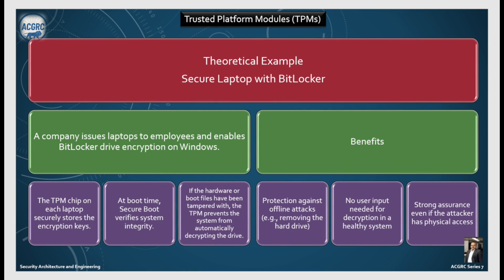For example, consider BitLocker securing your laptop. A company issues laptops to employees and enables BitLocker drive encryption on Windows. The TPM chip on each laptop securely stores the encryption keys. At boot time, secure boot verifies the system's integrity. If the hardware or boot files have been tampered with, the TPM prevents the system from automatically decrypting the drive. Benefits include protection against offline attacks, no user input needed for decryption in a healthy system, and strong assurance even if an attacker has physical access.